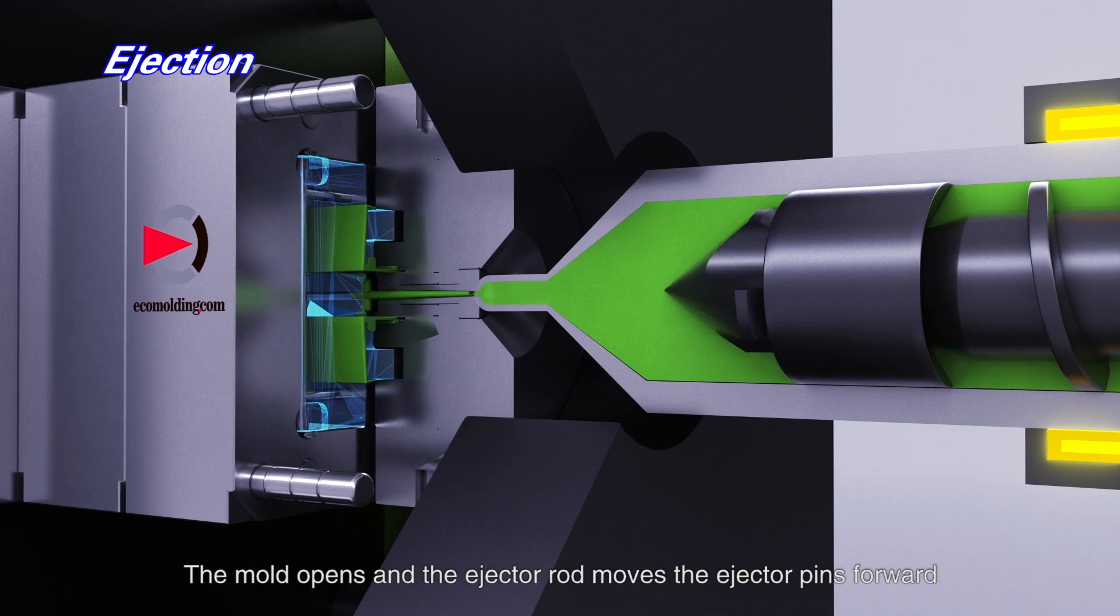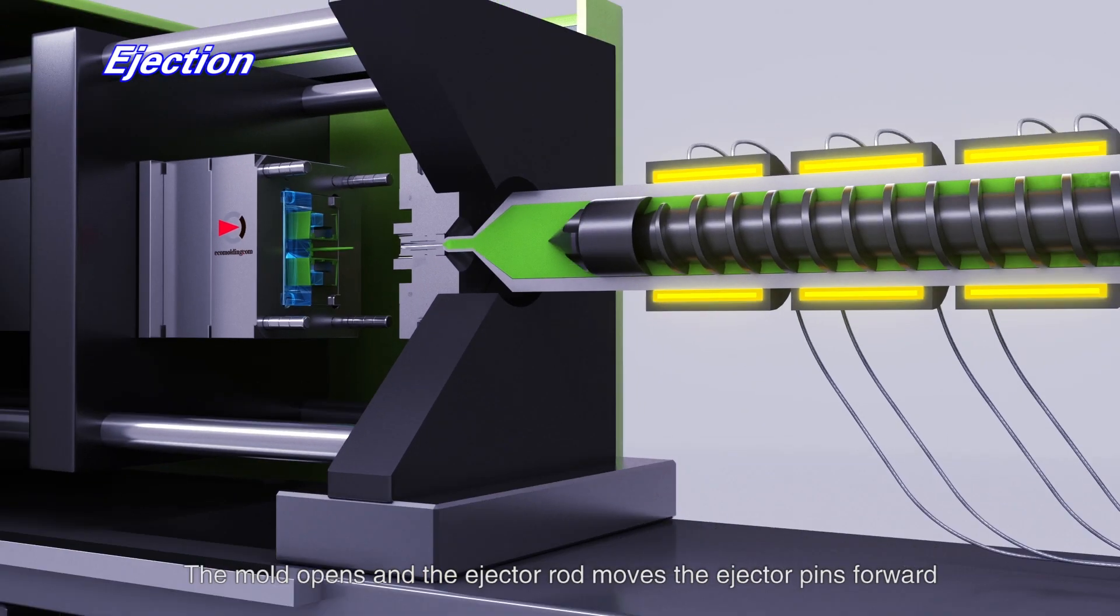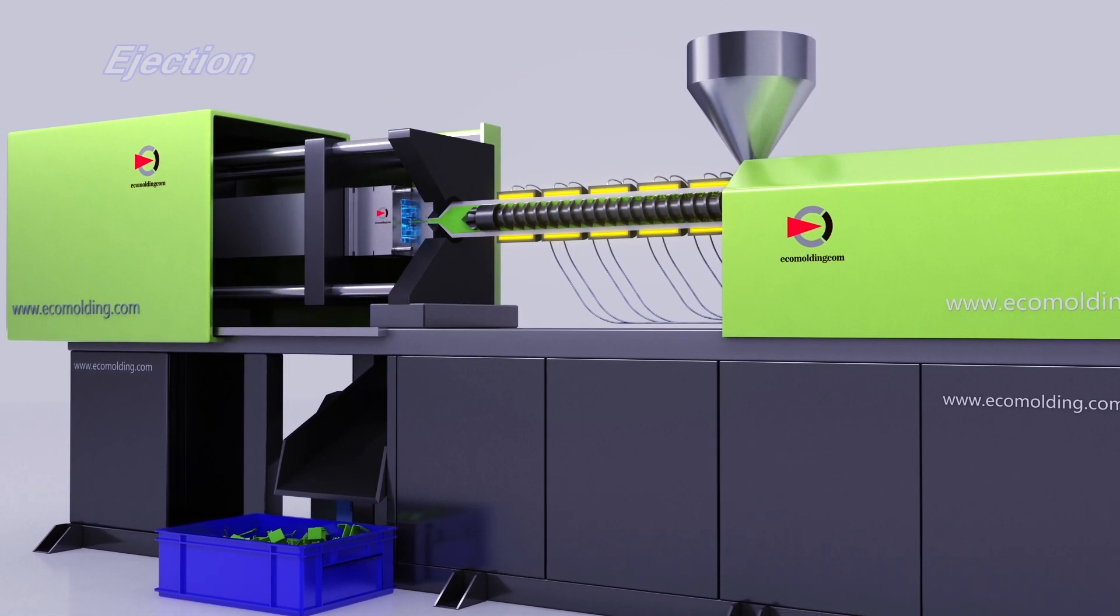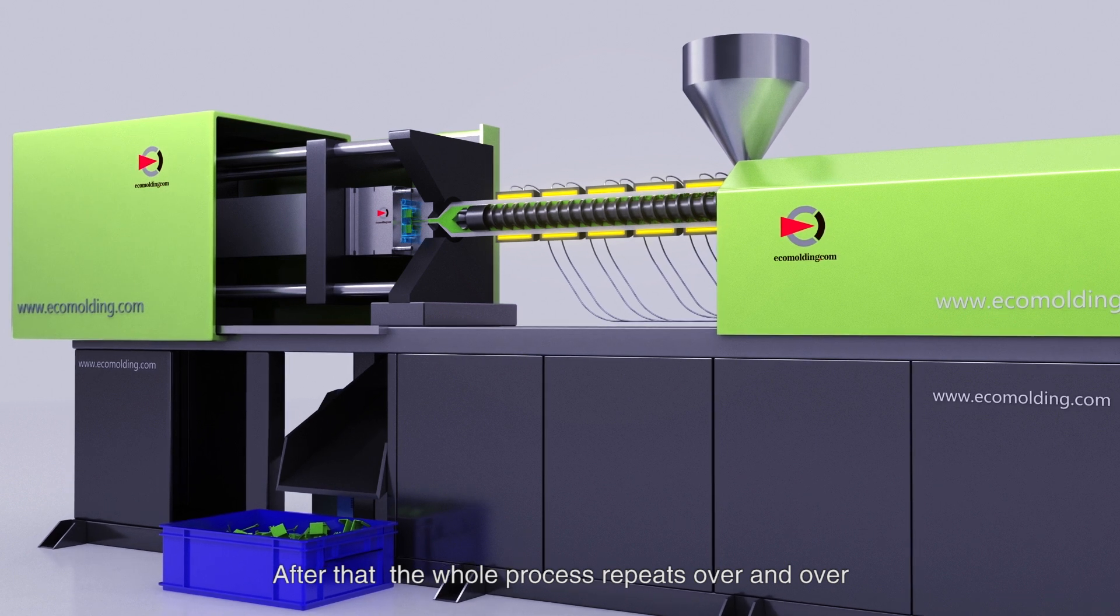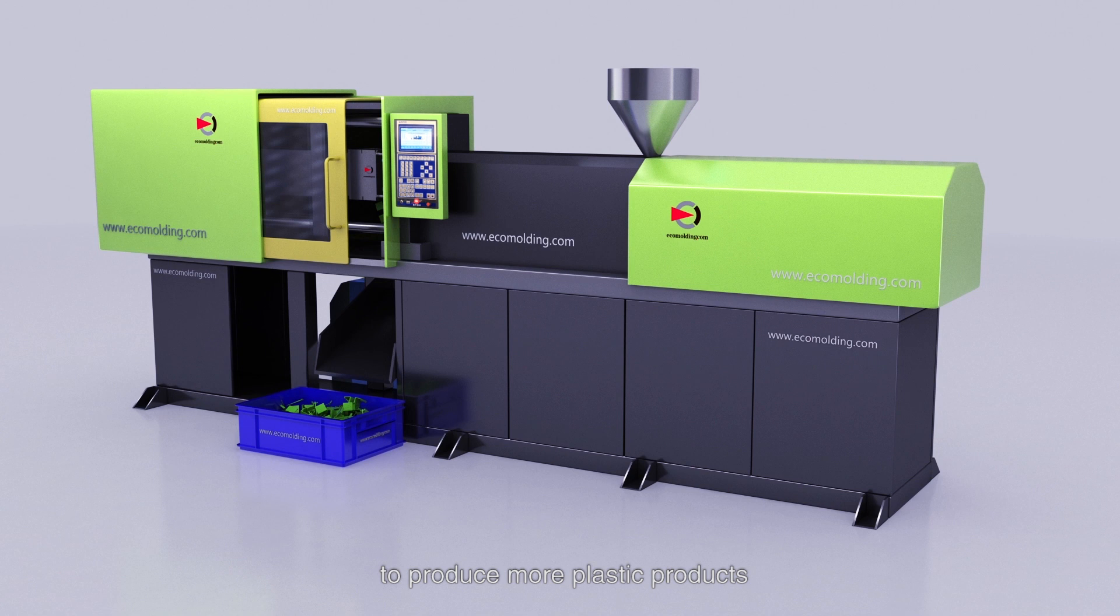The mold opens and the ejector rod moves the ejector pins forward. The part and runner fall and are captured in a bin. After that, the whole process repeats over and over to produce more plastic products.